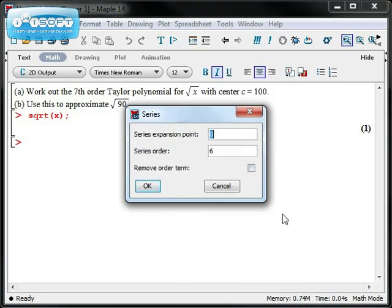It asks for the series expansion point, which is the center, and then the series order. And it's always worth noting that in Maple, the series order is one less than we'd call the order.